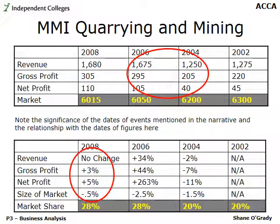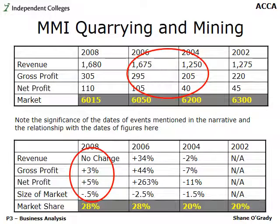Looking at the quarrying data, one very obvious finding — confirmed by the narrative — is that the quarrying and mining business is operating in a declining market. From 2002 to 2008, the entire market decreased from 6,300 to 6,015. Management's concerns were proved right. A model to name-drop here is the product life cycle: this particular mineral, in terms of the quarrying and mining business, has gone past maturity and is now in the decline phase.